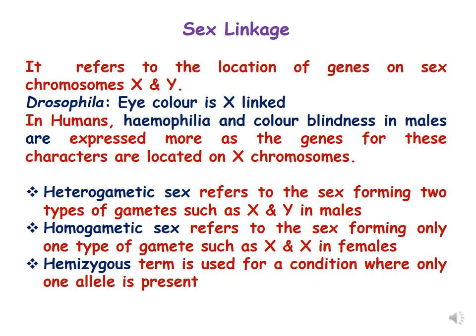Sex linkage refers to the location of genes on sex chromosomes X and Y. Examples include eye color in Drosophila, which is an X-linked character. In humans, hemophilia and colorblindness are more expressed in males because the genes for these characters are located on the X chromosome.